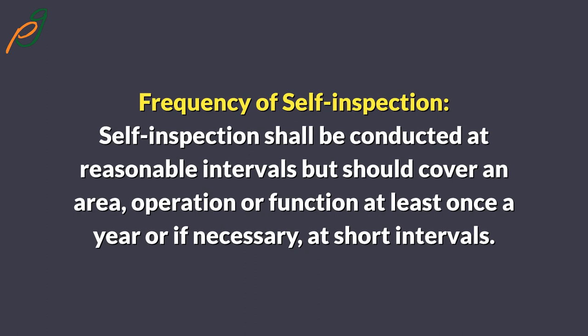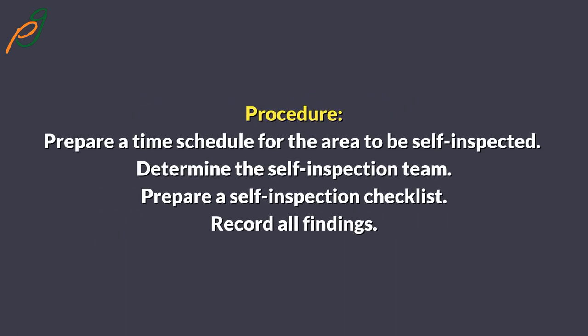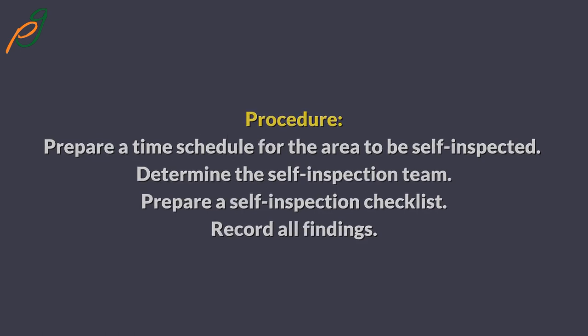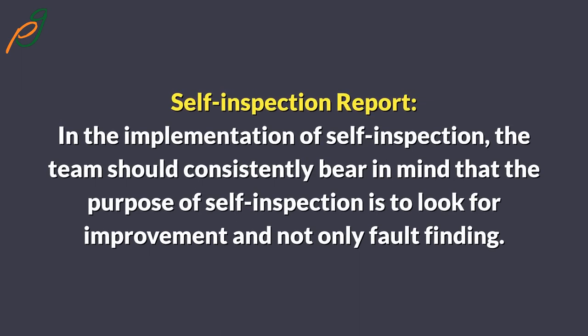Frequency of self-inspection: self-inspection shall be conducted at reasonable intervals, but should cover an area, operation, or function at least once a year, or if necessary, at shorter intervals. The procedure includes: prepare a time schedule for the area to be self-inspected, determine the self-inspection team, prepare a self-inspection checklist, and record all findings in the self-inspection report.